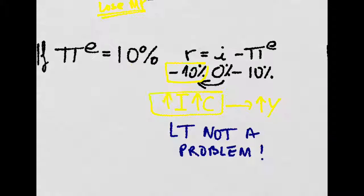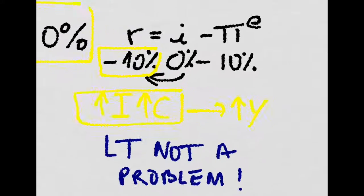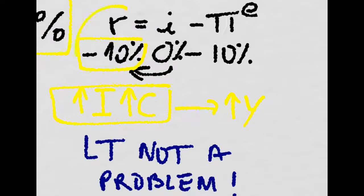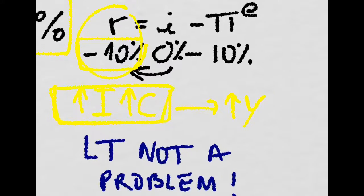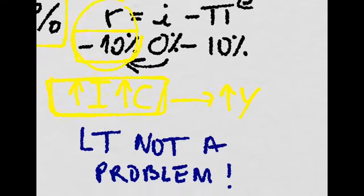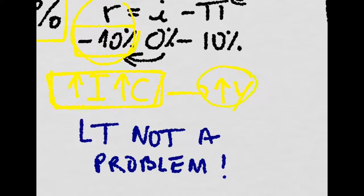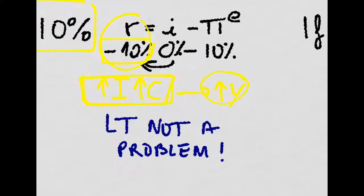So that is a serious problem because if we were in a liquidity trap with the nominal interest rate at zero, but our expected inflation was 10%, that wouldn't be a problem because the real interest rate would just be negative. That would mean that we would have a boost in investment and consumption that will increase output. So the liquidity trap here is not a problem.